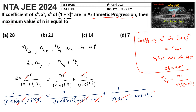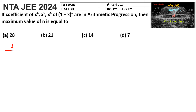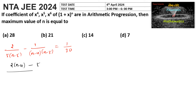After cancellation we have: 2 / (5·(n−5)) = 1 / ((n−4)·(n−5)) + 1/30. Rearranging: 2/(5·(n−5)) − 1/((n−4)·(n−5)) = 1/30. Taking the LCM as 5·(n−4)·(n−5), we get [2(n−4) − 5] / [5·(n−4)·(n−5)] = 1/30, which simplifies to (2n−13) / [5·(n−4)·(n−5)] = 1/30.